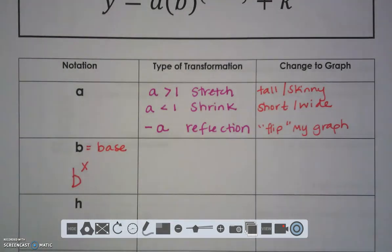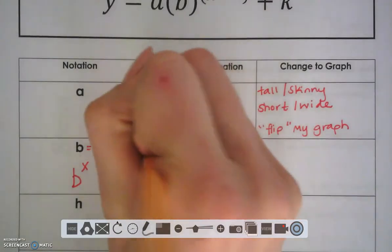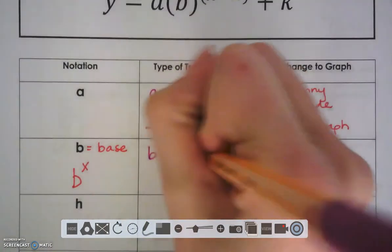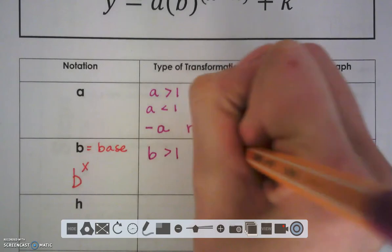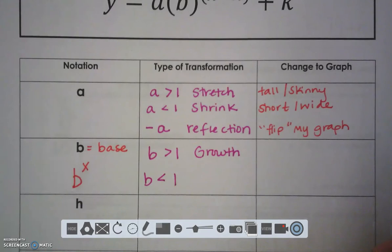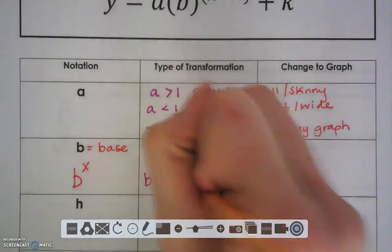When I look at my base, I'm looking to see if it's greater than 1. If it's greater than 1, that means I have a growth. If my base is smaller than 1, again, only fractions, this is a decay.